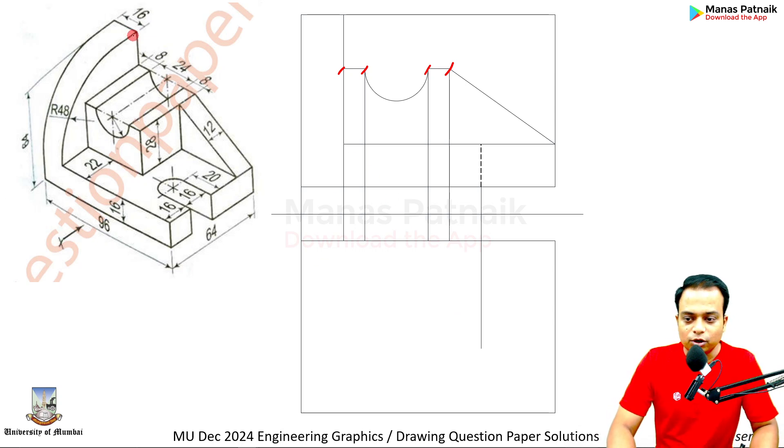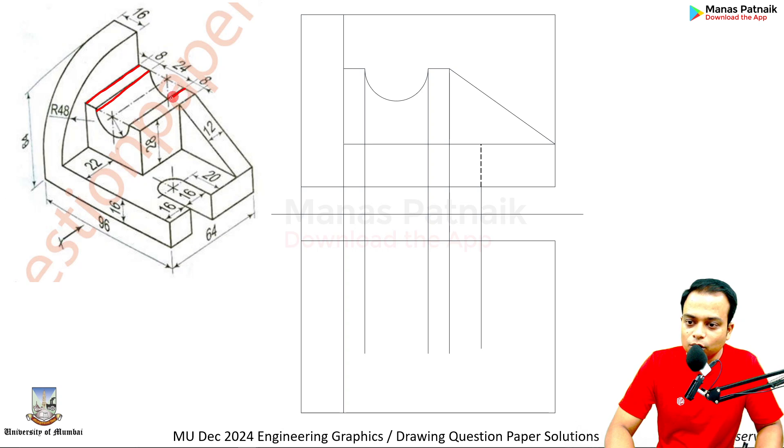When you view it from the top, you are going to see this. Take a look at this portion over here. At a distance of 16, this entire curve or arc that you see will look like a line this way. What about these lines? These are going to have a length of—